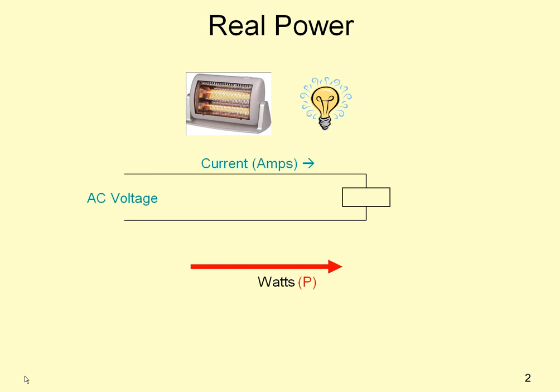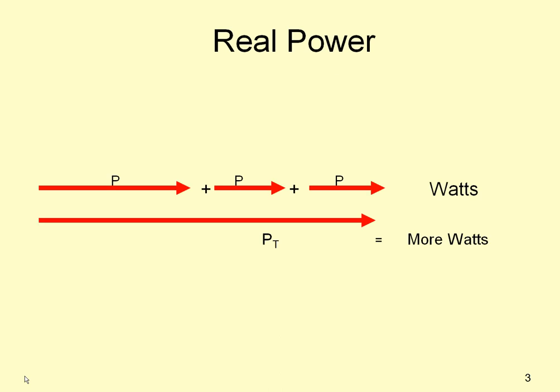We can represent the power by a phasor or line, the length of which is proportional to the quantity of watts. Real power can be added, so we simply add power consumed by other resistors and increase the length of the line to give us the total power.